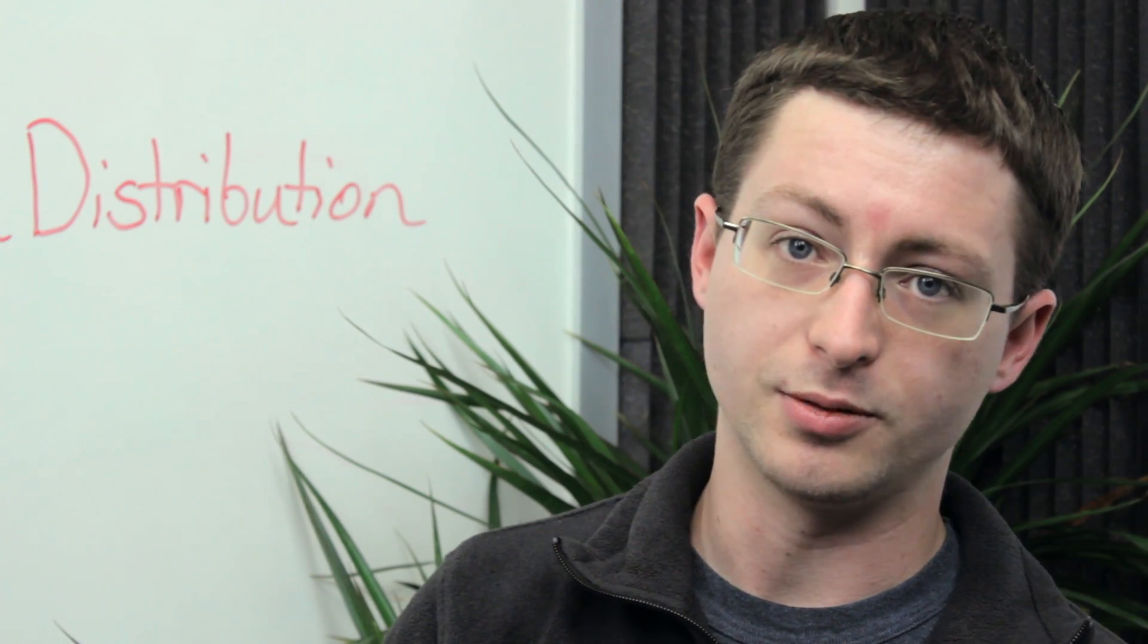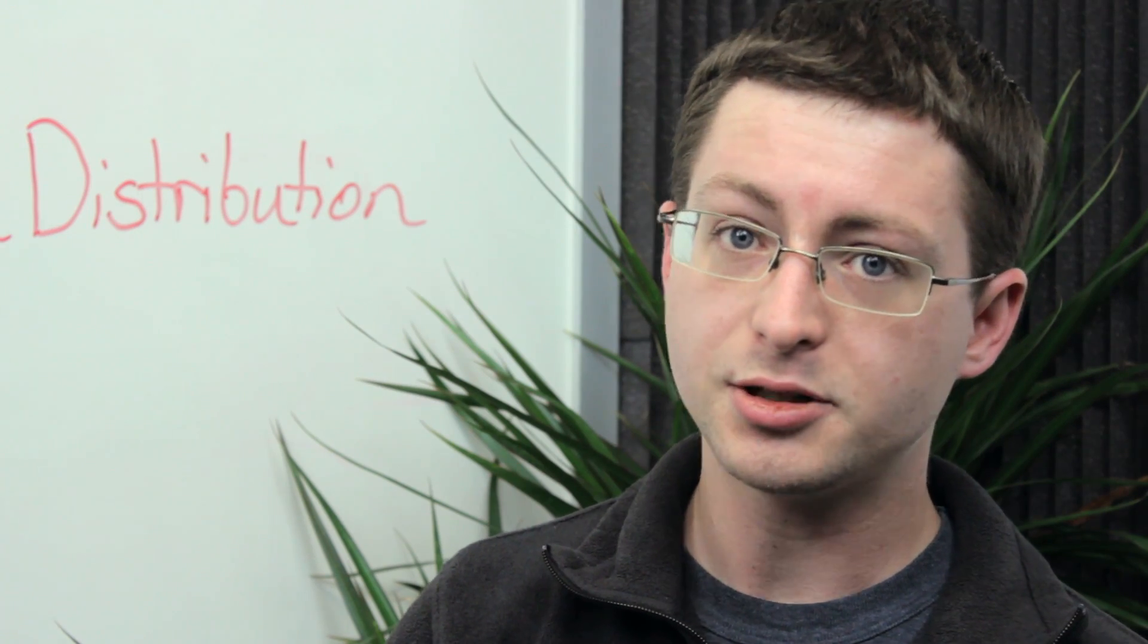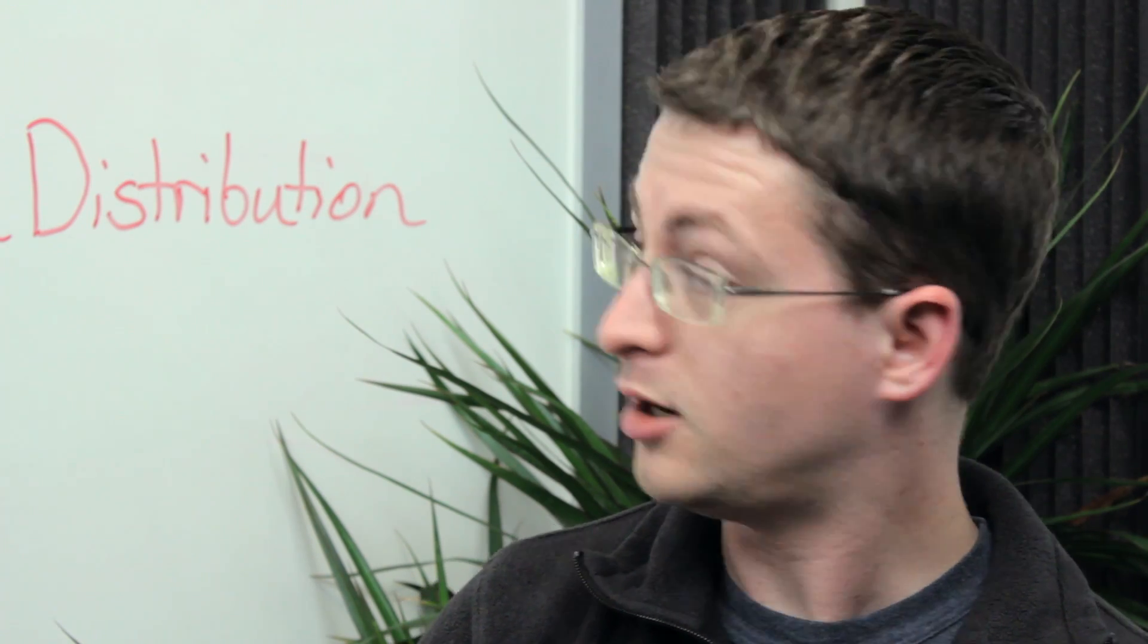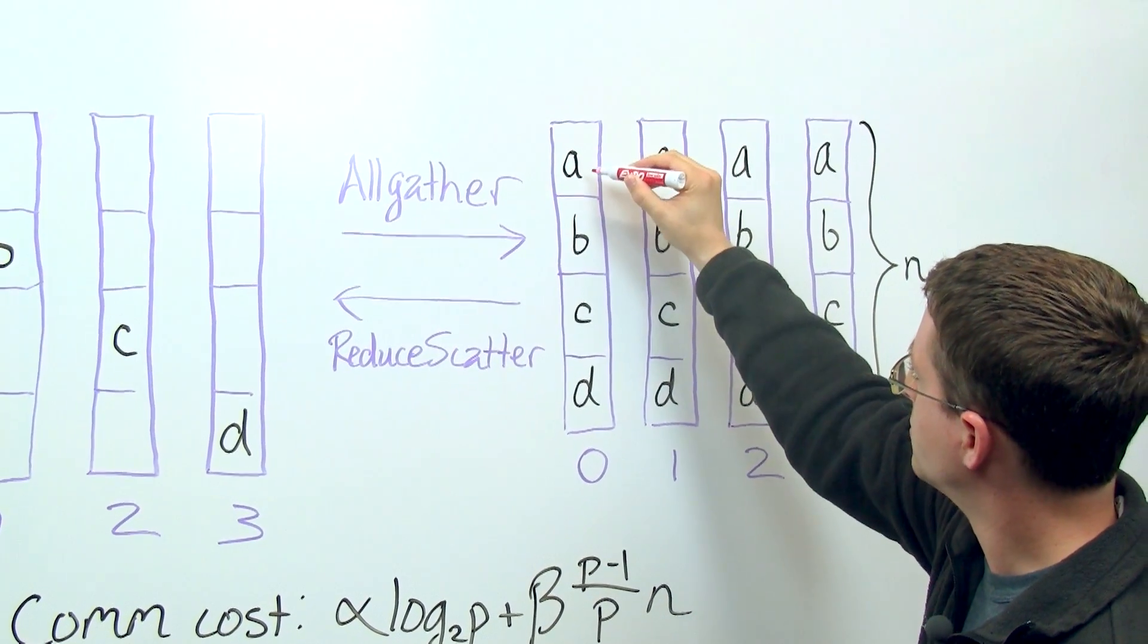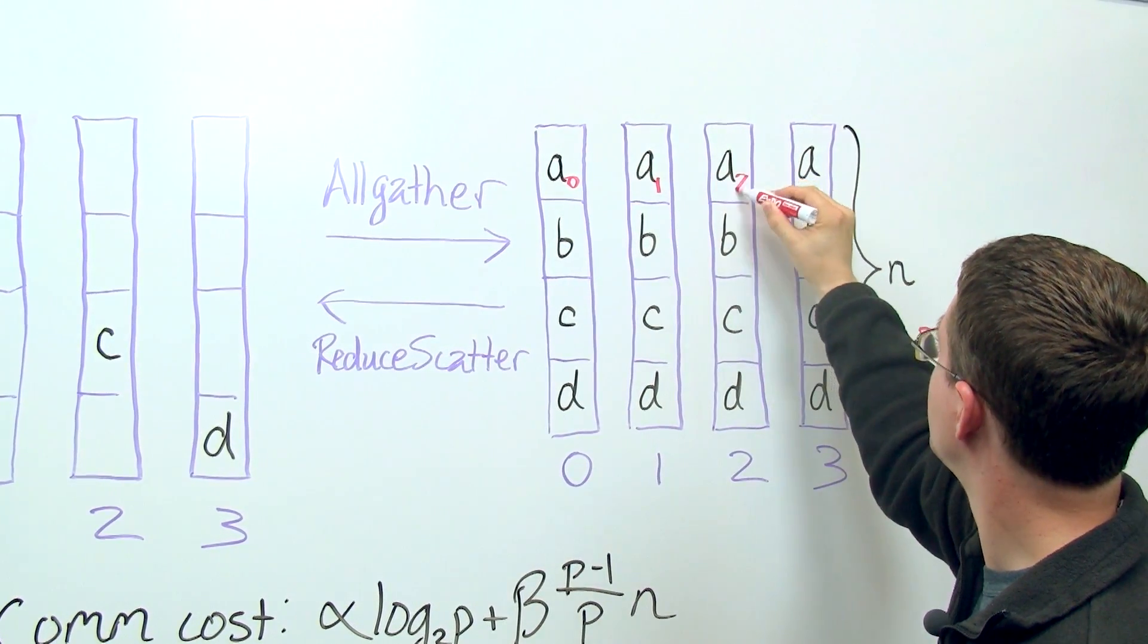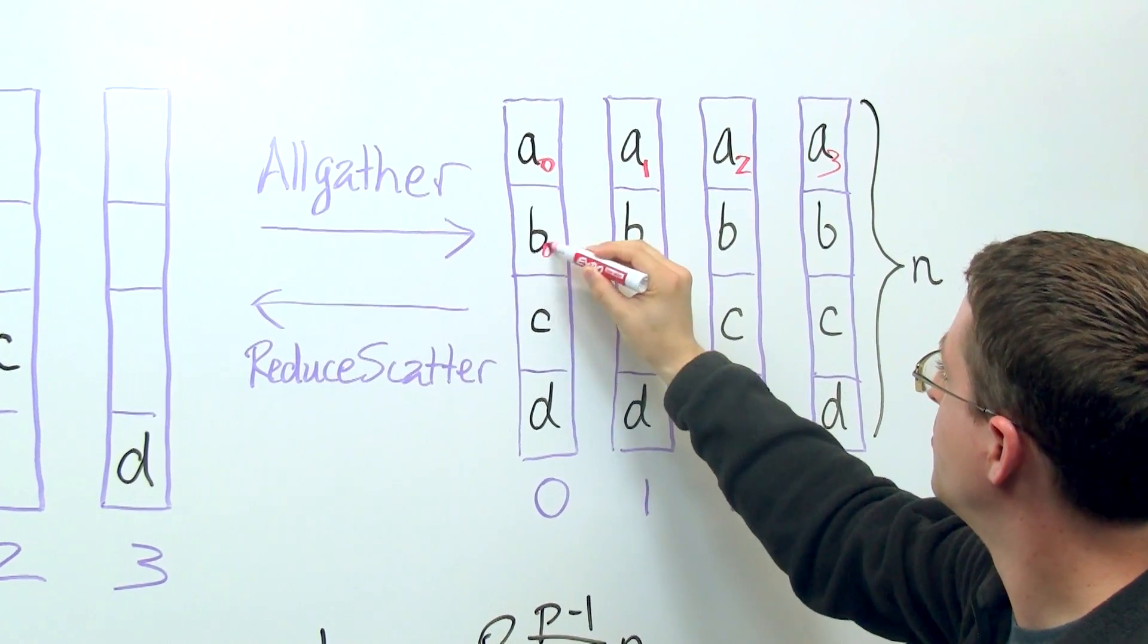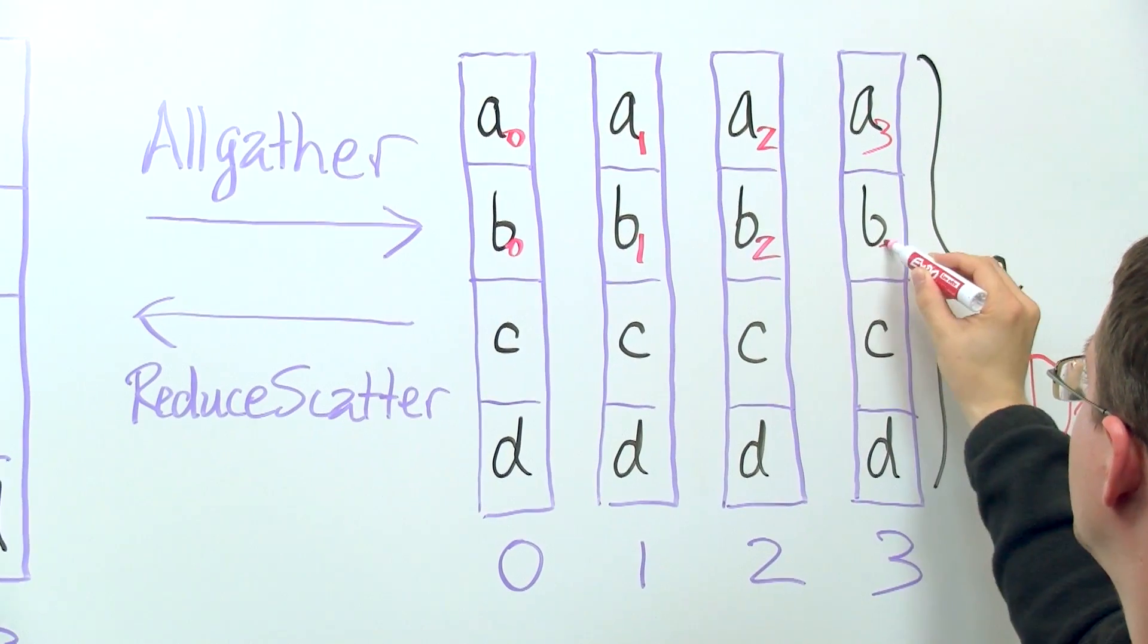The other operation that we're going to need to make use of is a reduce scatter. It's essentially the same except we start off with different data for each of these vectors. Let's say we have A_0, A_1, A_2, and A_3, then B_0, B_1, B_2, and B_3, etc.